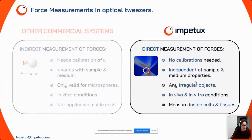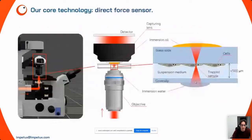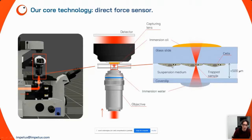This direct method has several advantages: you are not applying a tension meter model, so you need no calibration prior to measurements. It is independent of sample and medium properties, can measure forces on non-spherical objects, and can be used in both in vitro and in vivo conditions — meaning inside cells and tissues. In our direct force sensor scheme, the laser enters from the back port of the microscope, is focalized into a microchamber containing the sample — for instance adhering cells — and we trap a vesicle or organelle.